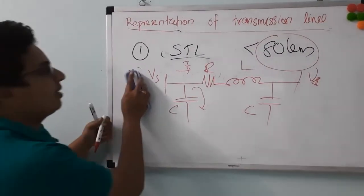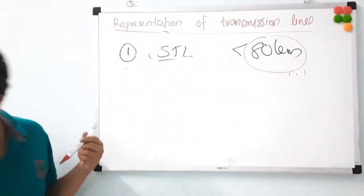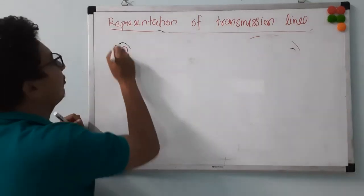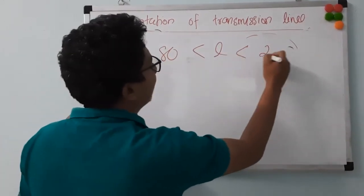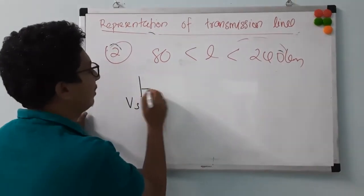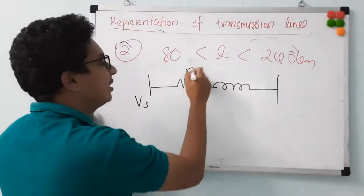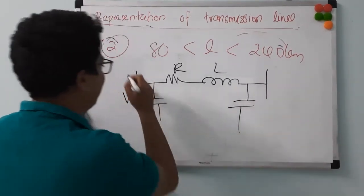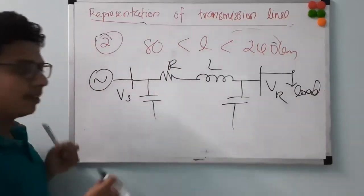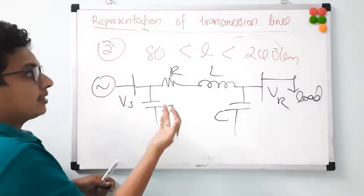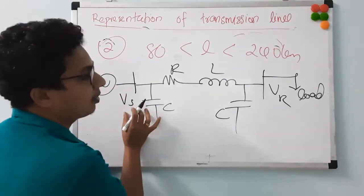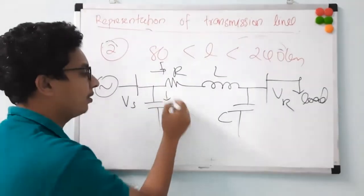For a medium length transmission line — length between 80 and 240 kilometers — we have to consider resistance, inductance, as well as capacitance. Over this length, there is enough charging current that affects the voltage at both sending and receiving ends, and there is also some contribution to current due to this capacitance. So for medium length transmission lines, we represent it with R, L, and C.